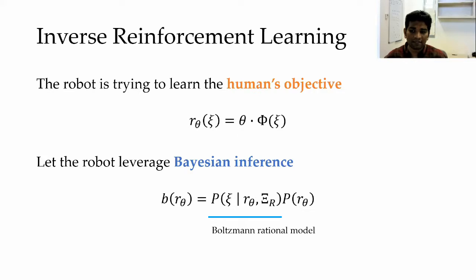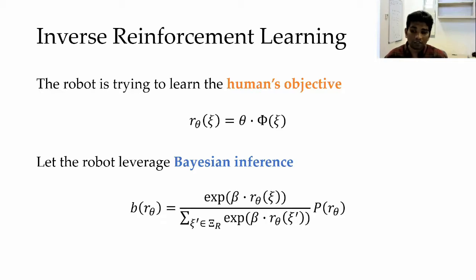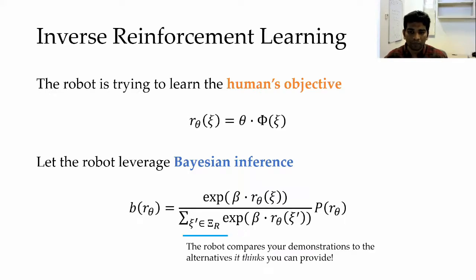This first term on the right is asking the question, how will a human act when they have a particular goal in mind? One way to model this is through the Boltzmann rational model that says humans are approximately optimal given a reward. Here how rational the human is can be modified through the hyperparameter beta. If you notice a denominator here, what we see is that the robot compares what the human showed it to all the alternatives it thinks the human can provide.